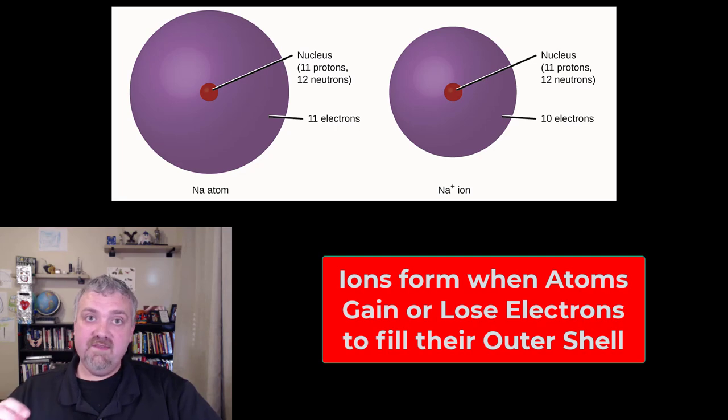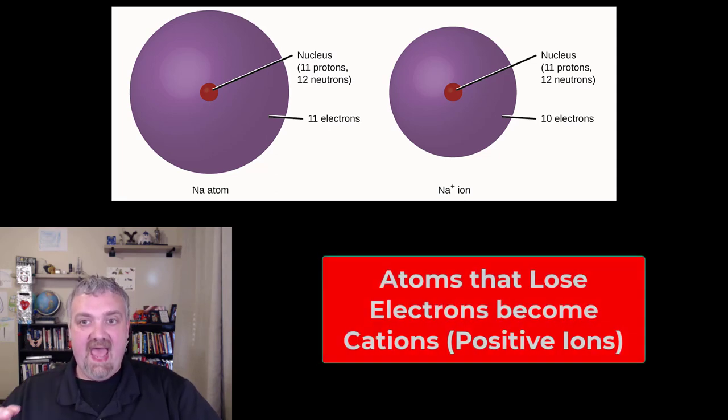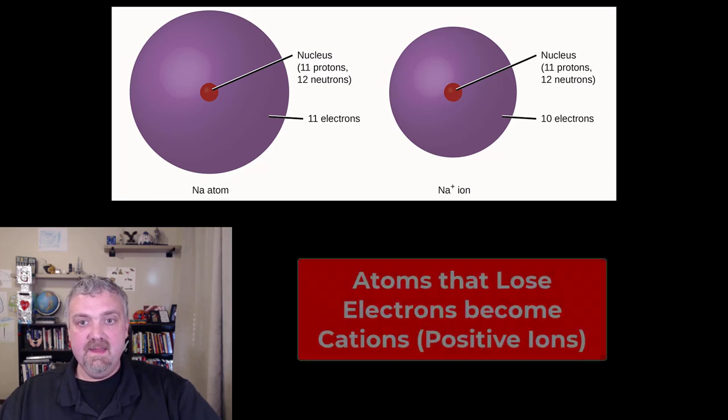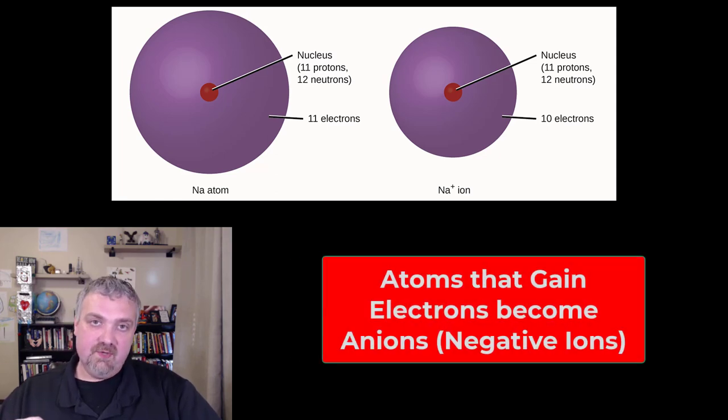But atoms will often become ions if they are trying to fill their outer electron shell by either giving up electrons or receiving electrons. If an atom loses a negative electron, like this one here, it is now an ion and it has a positive charge making it a cation. If an atom gains an electron, it will now have a negative charge because it has more negative electrons than it has positive protons. That will be a negative ion, also known as an anion.